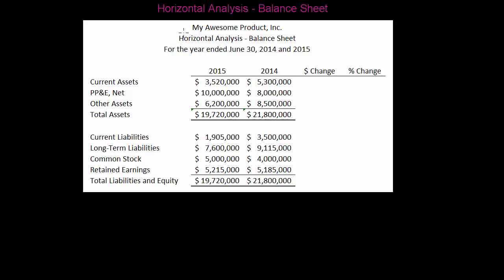In order to do a horizontal analysis you need to have at least two years worth of information. If you think about the word horizontal — it means horizon — so that means your analysis is going across two years. Basically what we're doing is comparing the performance from one year to the performance of another year.